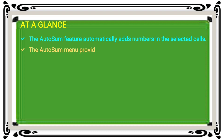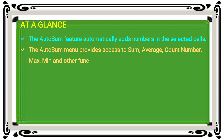The AutoSum menu provides access to sum, average, count number, maximum, minimum, and other functions. Sum finds the total value, average finds the average, count shows how many numbers are in the selected cells, maximum gives the largest number, and minimum gives the smallest number in the selected cell range.